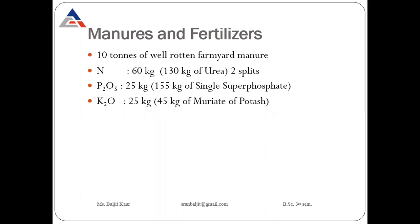Now manures and fertilizers. After transplanting the seedlings in the main field, we have to provide all nutrients to our plants so they can grow properly. Before transplanting, we have to add 10 tons of well-rotted farmyard manure in the main field.